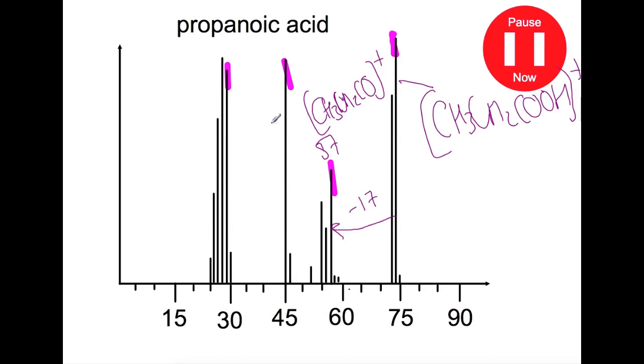If we now have a look between peak 74 and peak 45, here we've got minus 29. So to lose 29 we could lose this 15 here plus another 14 and be left with COOH positive. And this here would add up to 45.